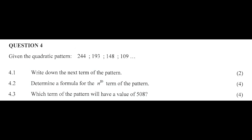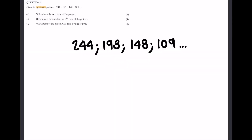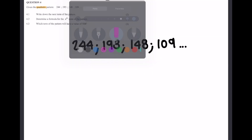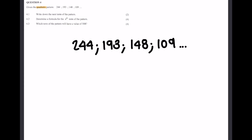If we look at our first question, we're given the quadratic pattern: 244, 193, 148 and 109. It tells us in the question that it's a quadratic pattern, so we know that it's going to have a constant second difference. So we're going to start by determining our differences.